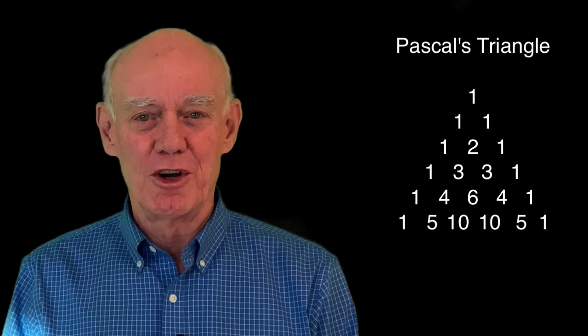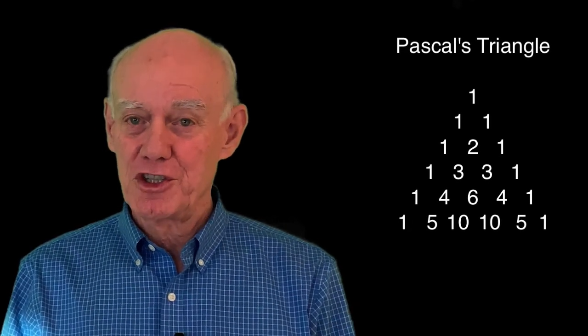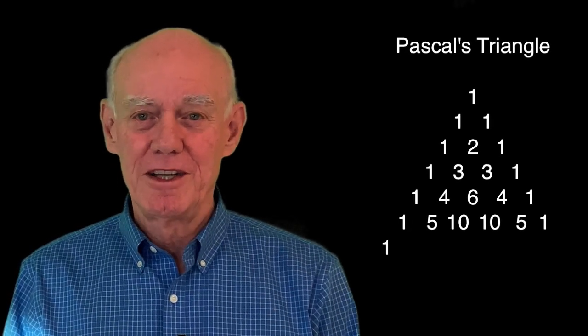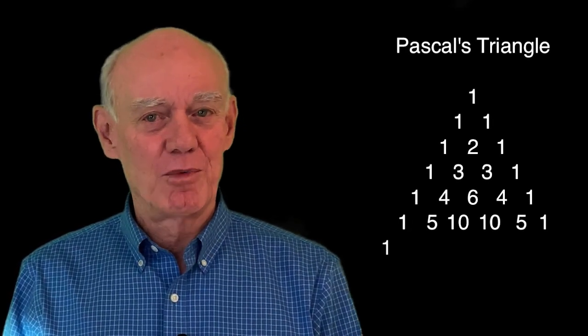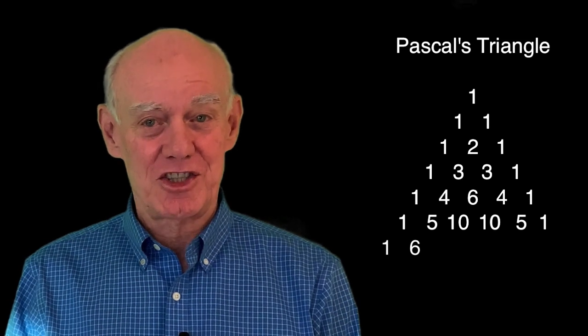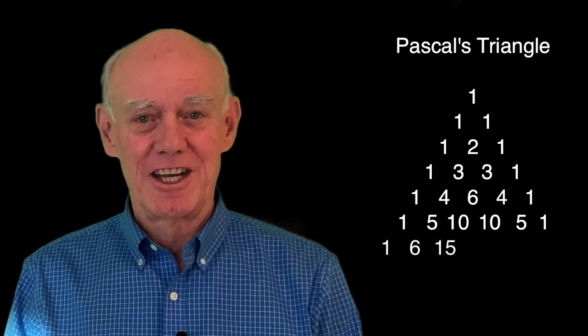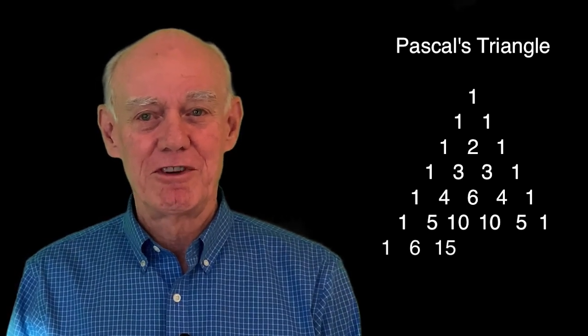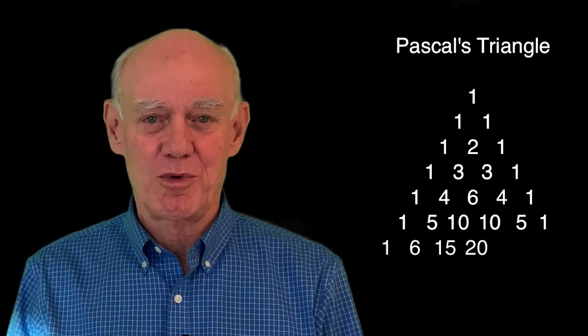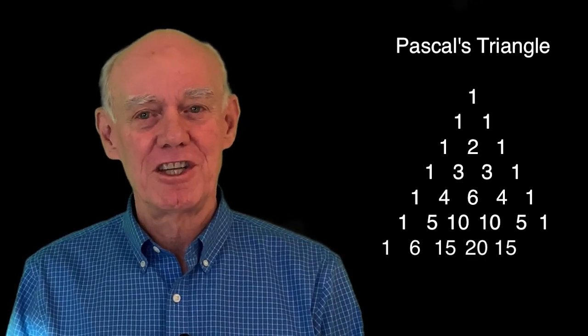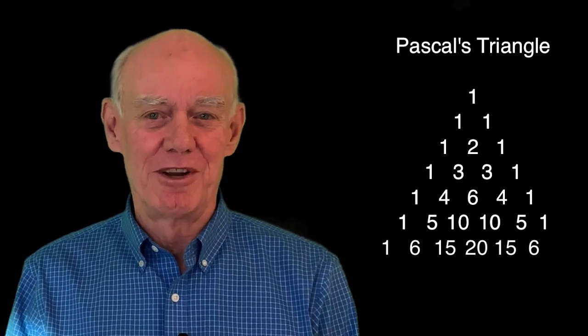Let's look at one more row. The first number will be 1, then we add 1 and 5 to get 6, the next number will be 15, then 20, 15, 6, and 1.